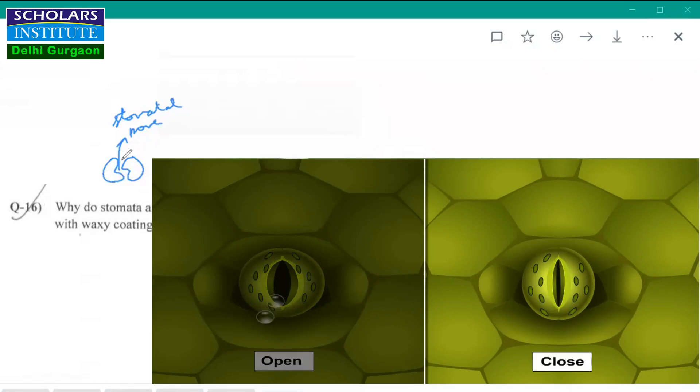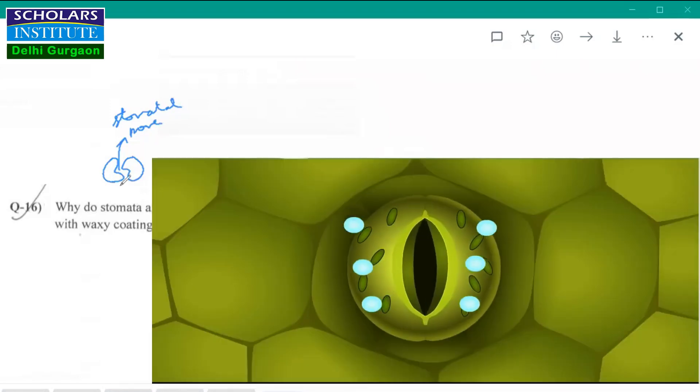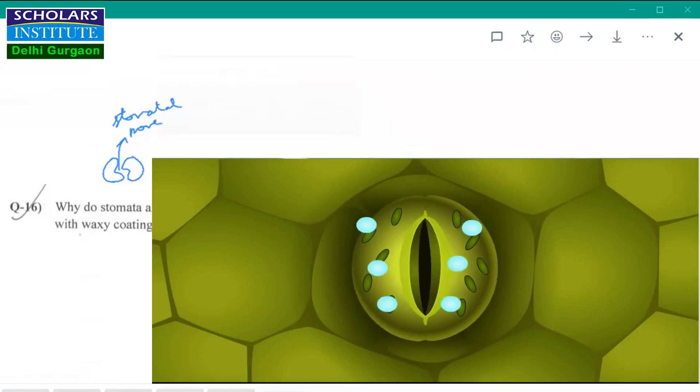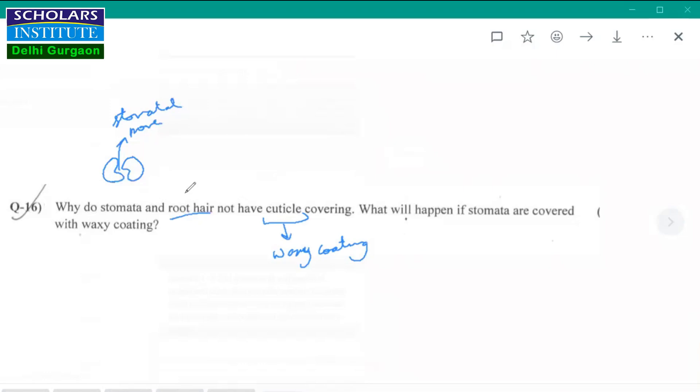If stomata is to be covered with the cuticle, suppose stomata, let us assume stomata was covered with cuticle, that waxy coating would not allow exchange of gases to take place and transpiration, that is loss of water from the pore, which means that these two main important functions of the plant will get hampered and plant will not be able to survive.